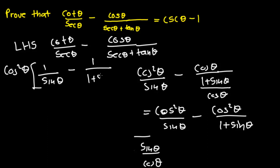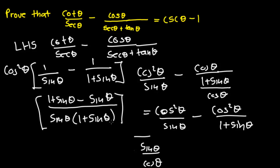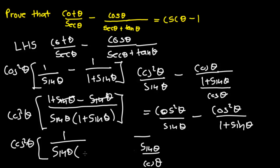We combine the terms inside the bracket by finding the LCM, which is sine theta multiplied by 1 plus sine theta. Sine theta goes into the LCM giving 1 plus sine theta times, so we get 1 plus sine theta; and 1 plus sine theta goes into the LCM giving sine theta times, so we get sine theta. The sine theta terms cancel, leaving 1 over sine theta multiplied by 1 plus sine theta, all multiplied by cos squared theta.